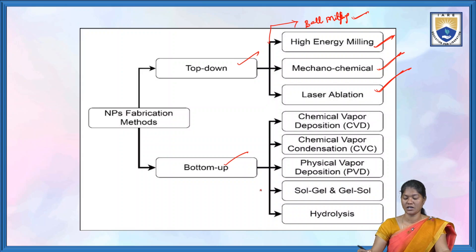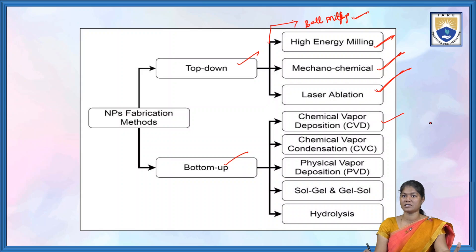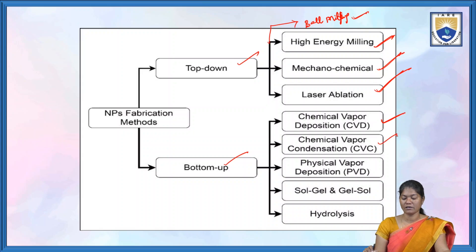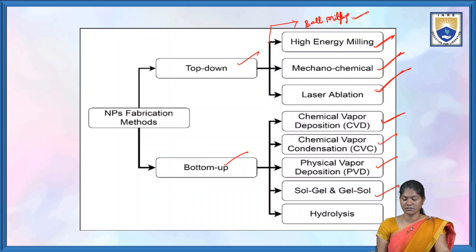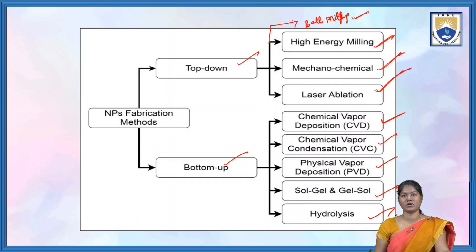Coming to the bottom-up approach, there is chemical vapor deposition (CVD), chemical vapor condensation (CVC), physical vapor deposition (PVD), sol-gel method, and hydrolysis. These are the different techniques used to fabricate nanoparticles under the top-down and bottom-up approaches.